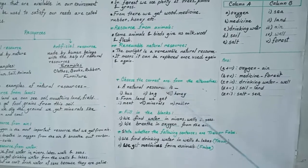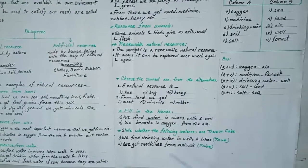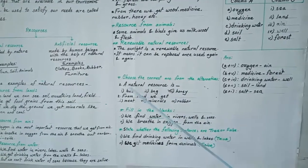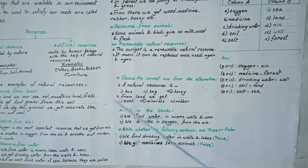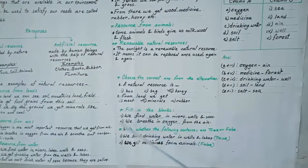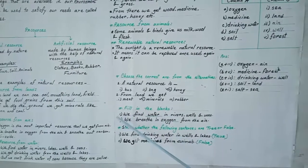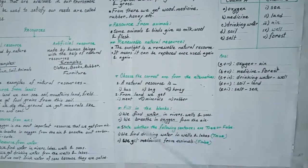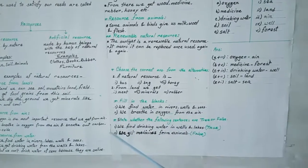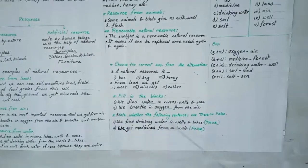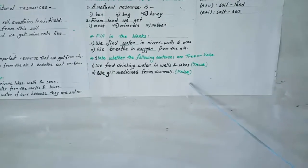During exam time, you write only the correct answer. For example, number one is honey, number two is minerals. For fill in the blanks, write only the correct answer: one — water, number two — oxygen. Same way, when you write true and false, write only true or false. Don't write the whole question.